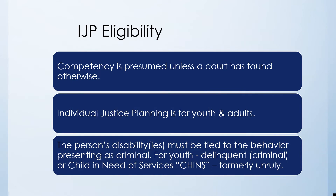When discussing eligibility for an IJP, there are a couple of key components to keep in mind. There is a presumption that the person is competent unless the court has found otherwise. An IJP can be developed for both youth and adults who have either at-risk behavior or are involved in the criminal or juvenile justice system. The person's disability must be tied to the behavior presenting as criminal, and may also involve a child in need of services, formerly identified as an unruly child.